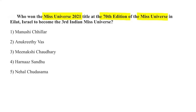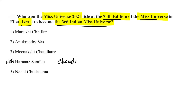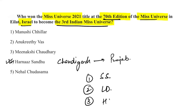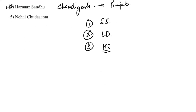Harnaaz Sandhu won the Miss Universe 2021 title at the 70th edition held in Israel, becoming the third Indian to win the Miss Universe title. She is from Chandigarh, Punjab. The first Indian to win Miss Universe was Sushmita Sen, the second was Lara Dutta.